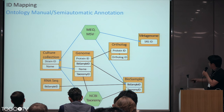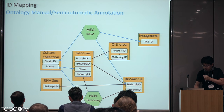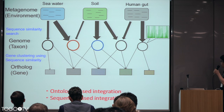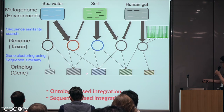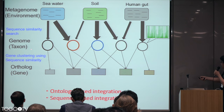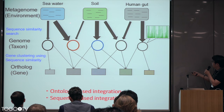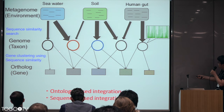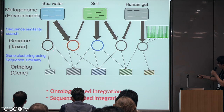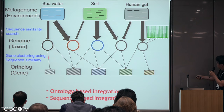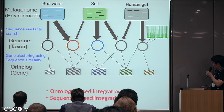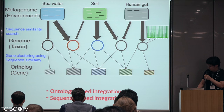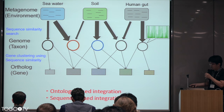Still some metagenomic data cannot be linked by ontology alone. So we use sequence-based integration: genes have DNA sequences, genomes have DNA sequences, and metagenomic data also has DNA sequences. We can conduct sequence similarity searches of the metagenomic data against genomes and link them using sequence data. Also, genes within genomes can be clustered using ortholog clustering to link between genomes. Our strategy is therefore based on both ontology-based integration and sequence-based integration.